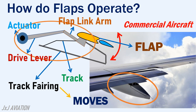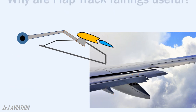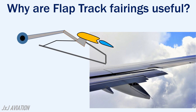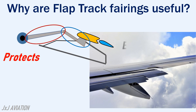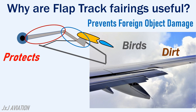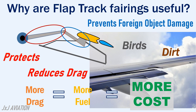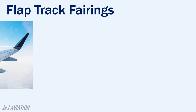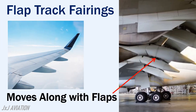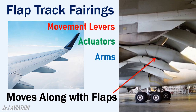This is extremely useful in commercial aircraft. The flap track fairing is useful because it protects the flap operating arm and the drive lever from foreign objects such as birds or dirt, and thus prevents foreign object damage. This fairing also reduces the drag acting on the aircraft. More drag means more fuel consumption, which means more cost to operate the aircraft. The flap track fairing moves along with the flaps, so at all flap positions the fairing will cover the movement levers, actuators, arms, and the track.